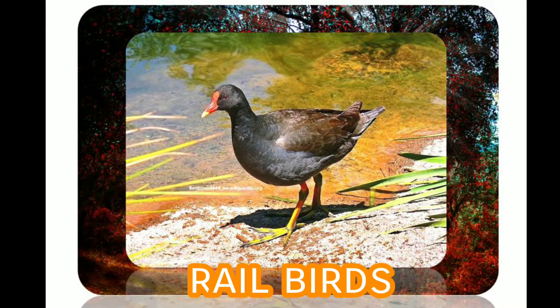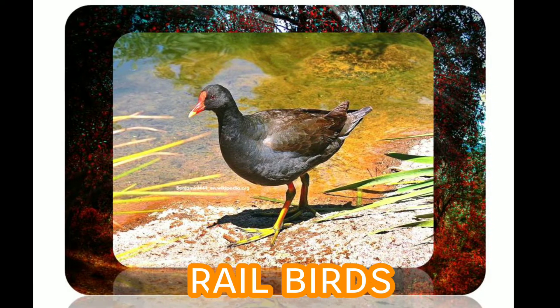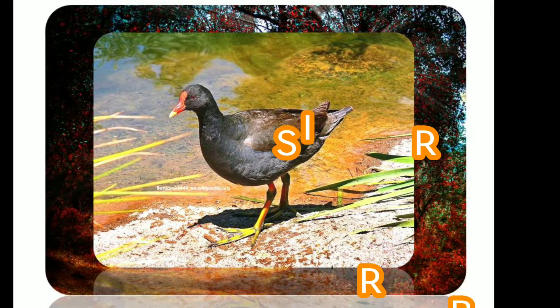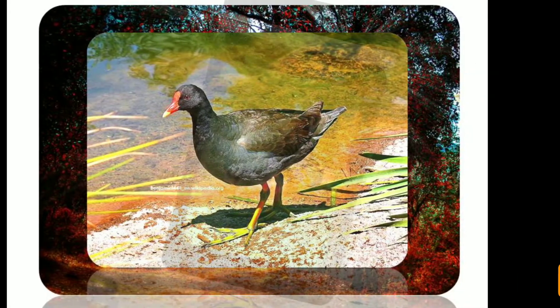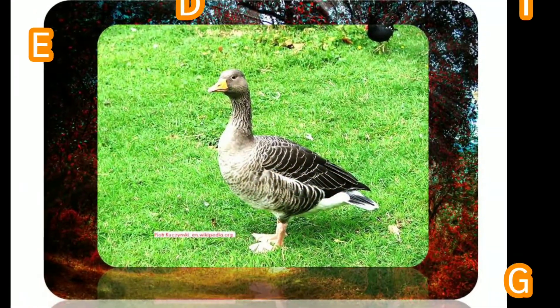Rail birds: the most common rail habitats are marshland and dense forest. They are especially fond of dense vegetation. Rail birds' lifespan is five to nine years.